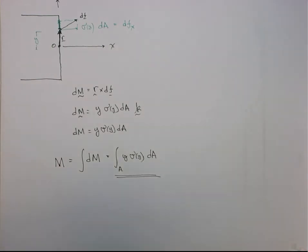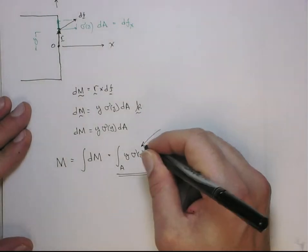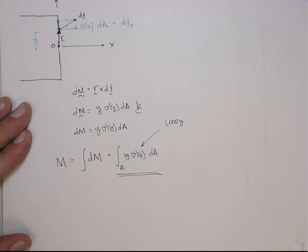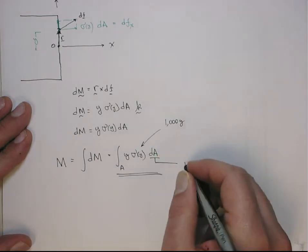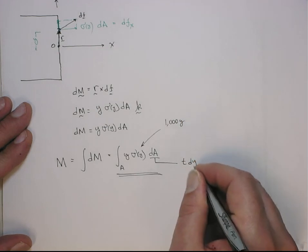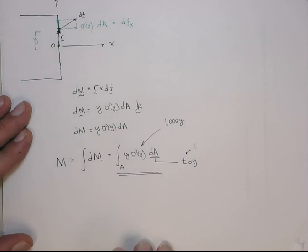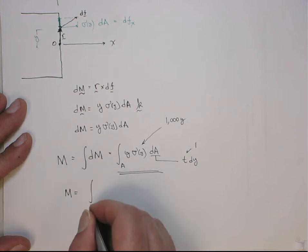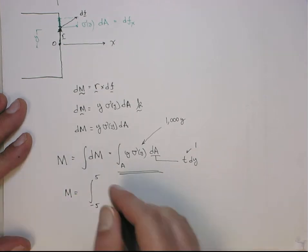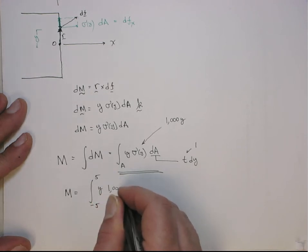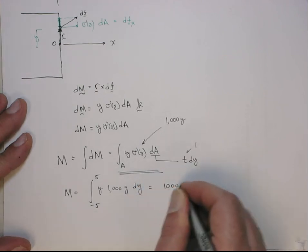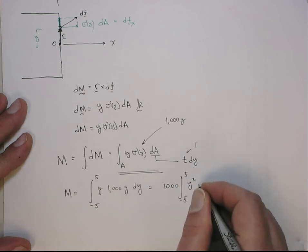Now let's plug in our actual distribution and compute the internal reaction moment. We know that the normal stress is 1,000 times y, and we know that dA is the thickness times dy. The thickness in this case is 1. That transforms this integral to a dy integral.